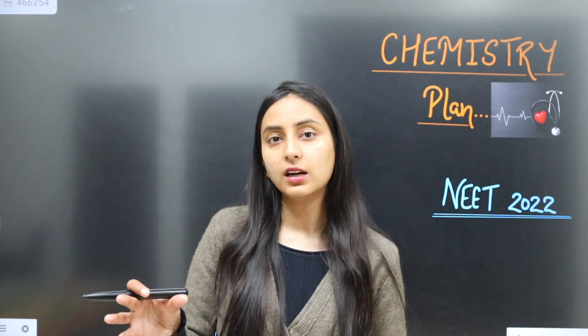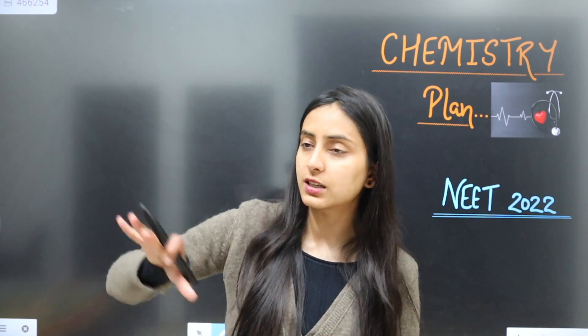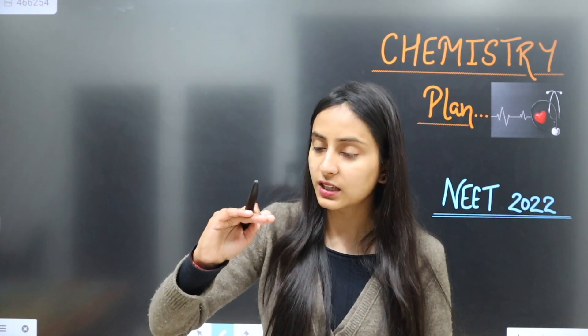First of all, we can read interlinked chapters in chemistry together. There are three sections: inorganic chemistry, physical chemistry, and organic chemistry. It is important to group organic, inorganic, and physical chemistry together in different groups. Some students think they will do all physical chemistry chapters first, then all inorganic — I think that is wrong. In one group you should have one organic chapter, one inorganic chapter, and one physical chapter, so all three sections are prepared together.